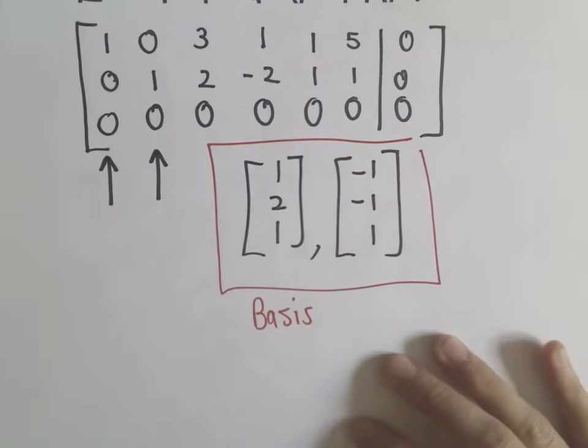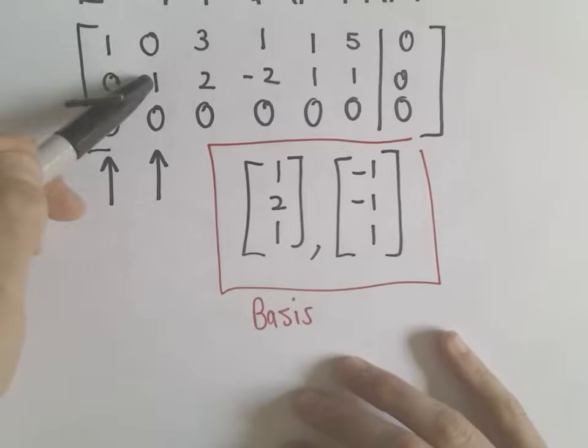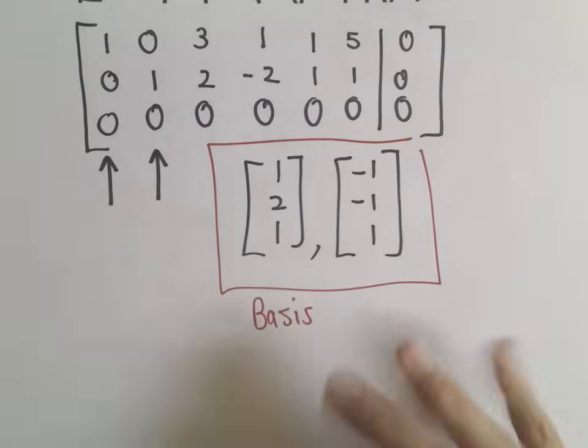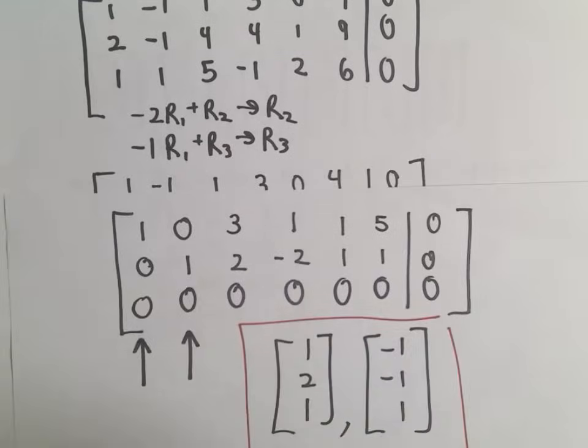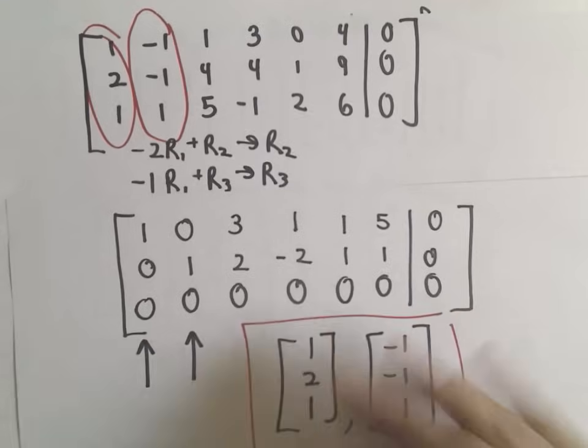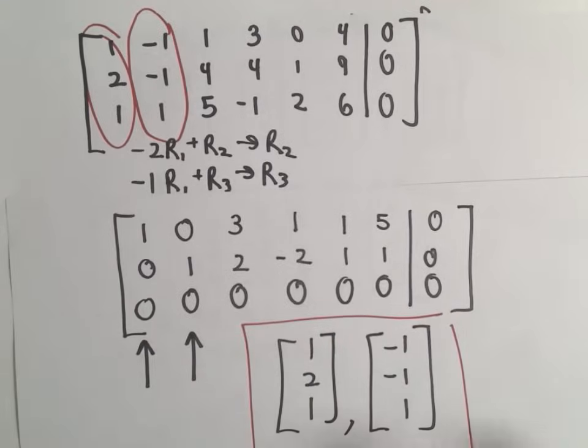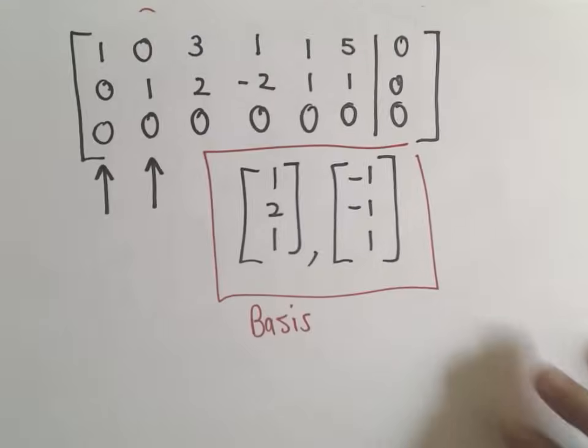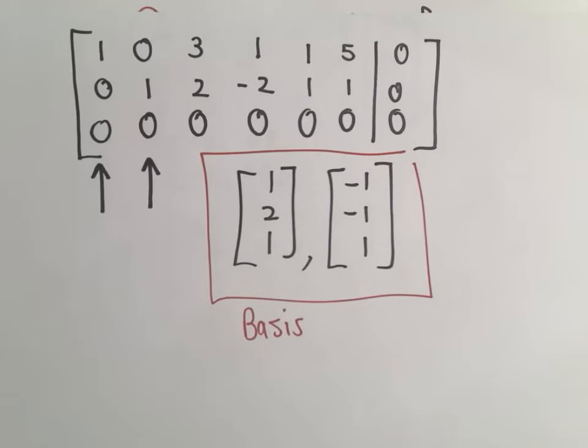Once it's in reduced echelon form, just look for the leading ones. Whatever was originally in those columns, those will be your basis elements for that set of vectors that you start with. So nothing too terrible. Just a little row reduction, and that's all there is to it.